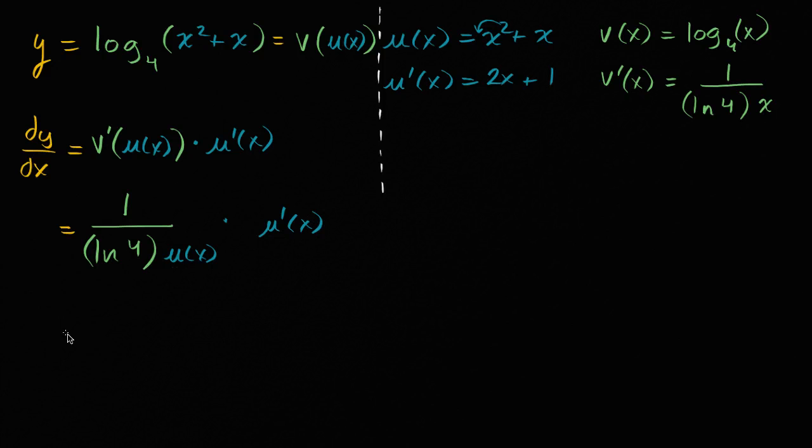And I'm doing more steps just hopefully so it's clearer what I'm doing here. So this is one over the natural log of four, u of x is x squared plus x, and then we're going to multiply that times u prime of x, so times two x plus one.